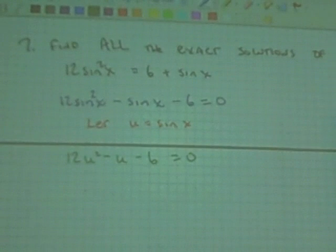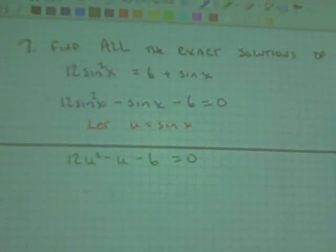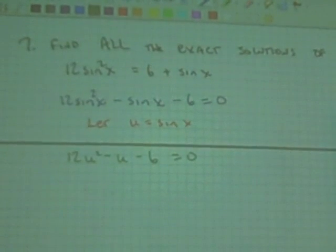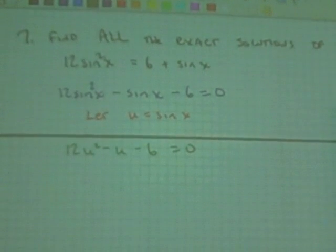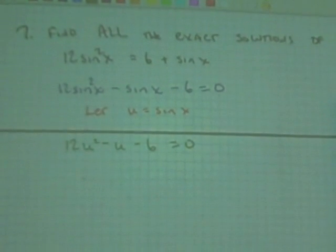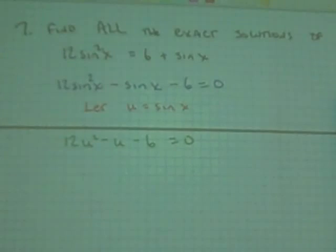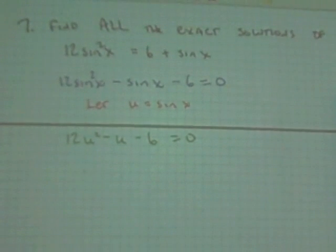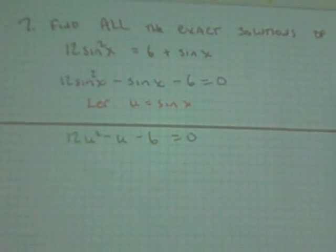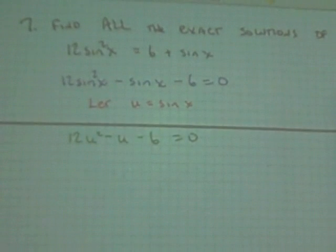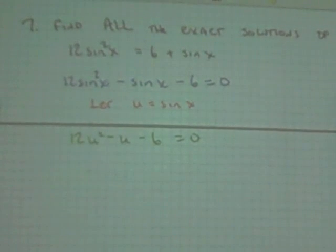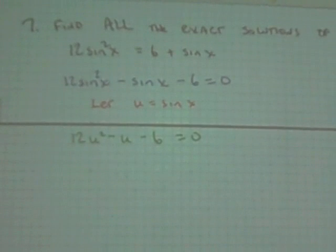What are we going to have to do now? Factor. How are we going to factor this? What's going to make this hard? The 12. The 12 out front, right? How are we dealing with that?